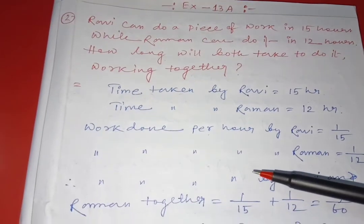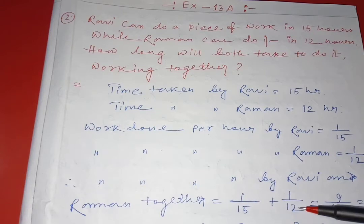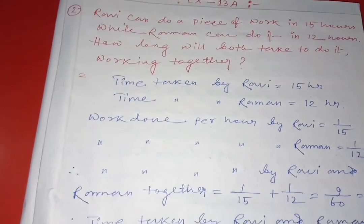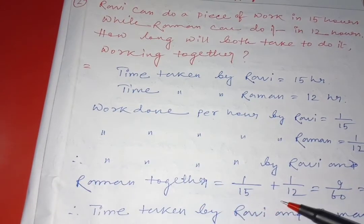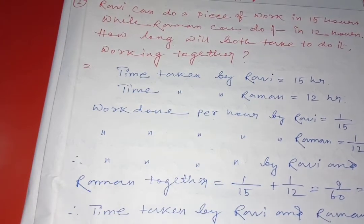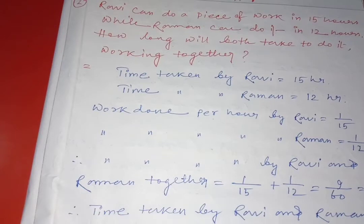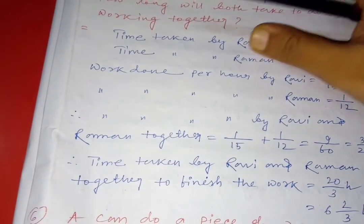The question asks what is the required time if they work together. That means 1 by 15 plus 1 by 12 — because together — which equals 9 by 60, that means 3 by 20. Now whenever you need to find the time, you invert this fraction: denominator goes to numerator and numerator goes to denominator, which is equal to 20 by 3 hours, that means 6 and two-thirds hours.